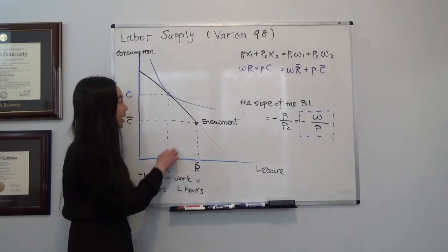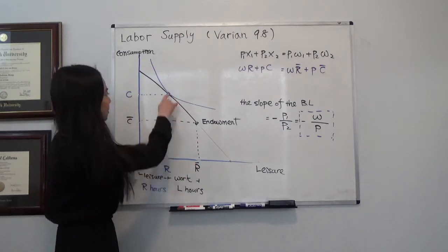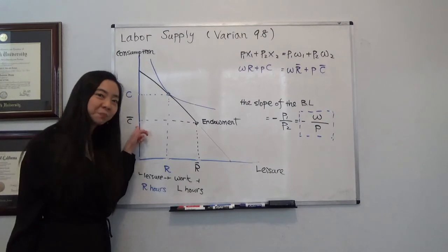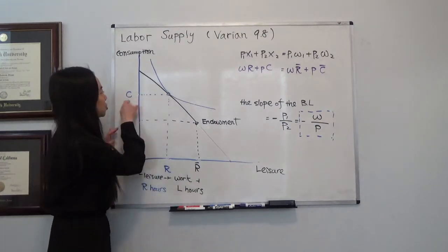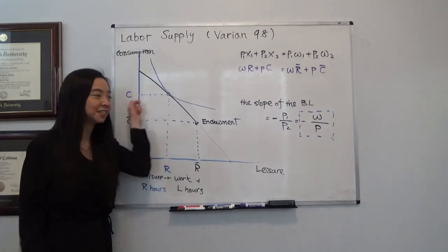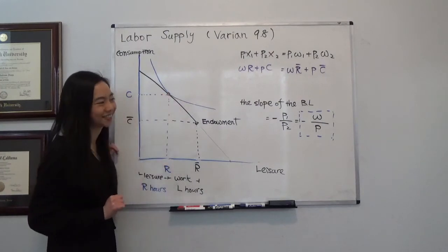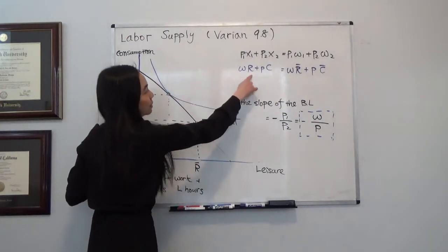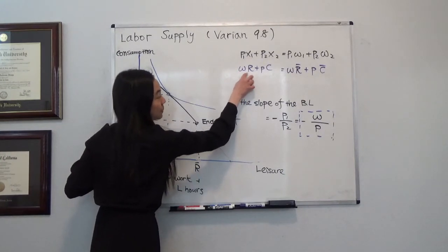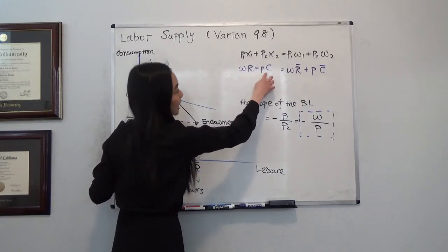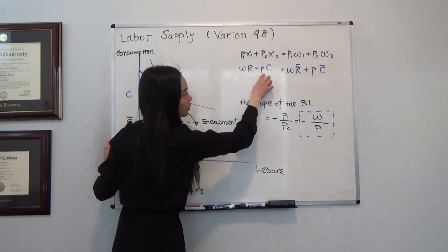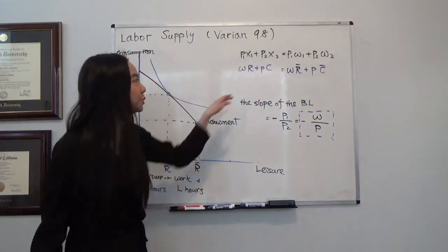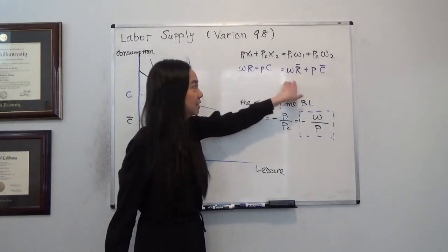So this number of hours I spend on working and this is my leisure hour. And because of that, I end up with more consumption. So instead of consuming only c̄ units of cheese, I'm consuming c units of cheese. And that is my final choice. So the value of my final choice, w times r, that's the number of hours I spend on leisure, plus p times c, that's the final consumption of cheese, is equal to the value of my initial endowment.